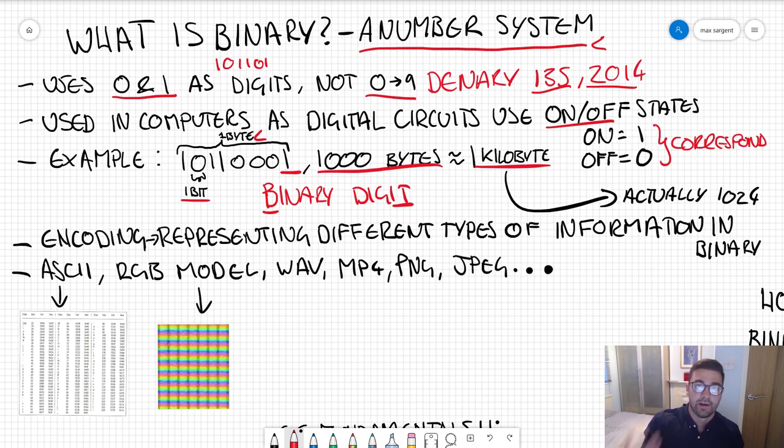When you get a thousand bytes, you've got yourself a kilobyte, just like when you've got a thousand grams you've got yourself a kilogram. You obviously get megabytes, gigabytes, etc. One thing to note is that it's not actually a thousand, that's only an approximation, it's actually 1024.